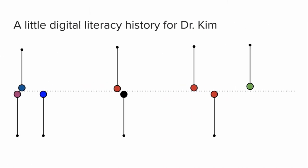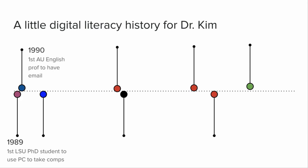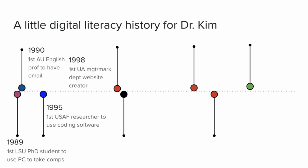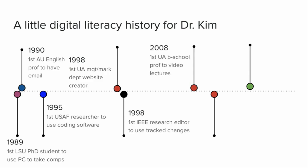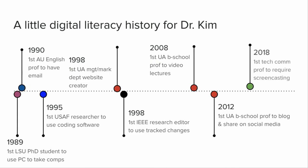Let me provide a little history about my own digital literacy journey. I was the first doctoral student to get permission to complete comprehensive exams on a PC, back in 1989. I was the first English professor at Auburn to get an email address. I was the first Air Force researcher to use qualitative research software, back in 1995. I built the first website for the management department at the University of Alabama. I was the first editor at IEEE to require the use of track changes in publishing research manuscripts. I was the first business school professor at Alabama to start video capture of my lectures, and later to begin blogging and sharing on social media. And I think I was the first tech comm professor at UNT to require students to produce screencasts. The point is not that I'm the most technically proficient professor — I'm not. The point is that new digital tools appear constantly, and I've had to learn many new ones over the years. You will too.